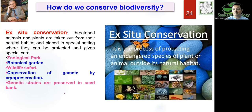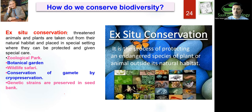Ex situ conservation means protecting threatened animals and plants outside their natural habitat. They are removed from their natural habitat and placed in a special setting where better care can be taken, such as zoological parks, botanical gardens, and wildlife safaris. Sometimes gametes are preserved through cryo-preservation at low temperatures. Seeds and pollen are also preserved in pollen banks. All these are examples of ex situ conservation — protection away from the natural habitat.